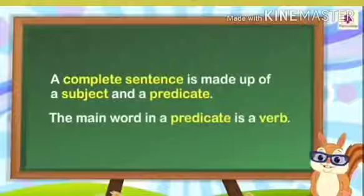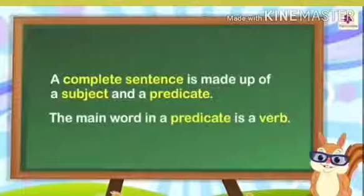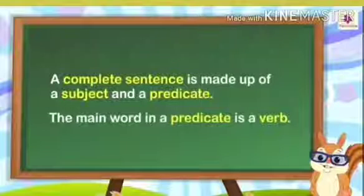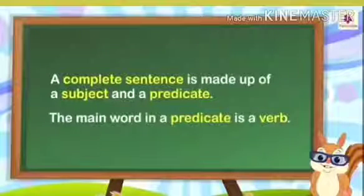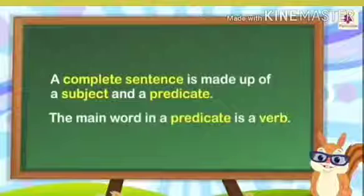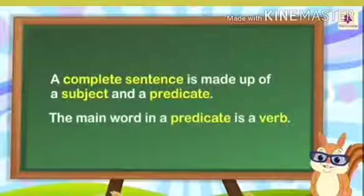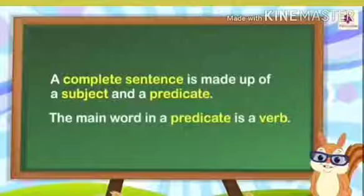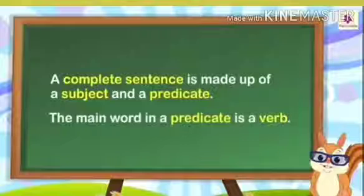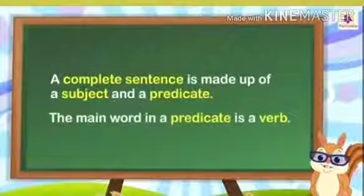A complete sentence is made up of a subject and a predicate. Now children, you all have learnt about subject and predicate in the previous chapter. You all know that a sentence is made up of two parts — one is the subject and one is the predicate.